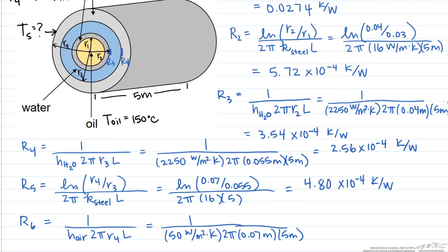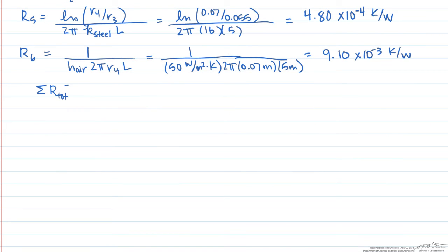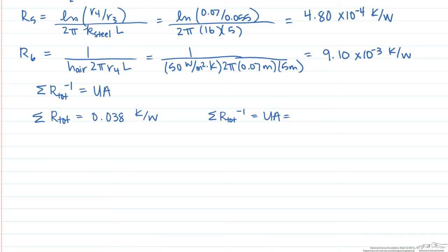Now that we have these resistances, the sum of our resistances to the minus 1 is going to equal our overall heat transfer coefficient times A. So if we add up all those resistances, we come up with 0.038 Kelvin per watt. And since UA is just the inverse of that, we end up with 26.5 watts per Kelvin.